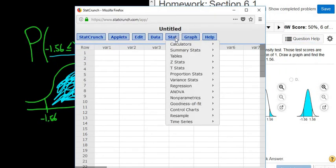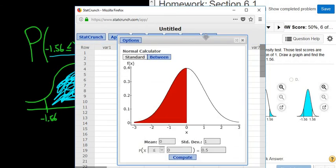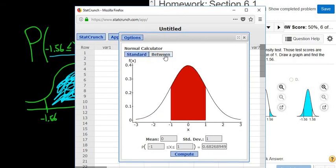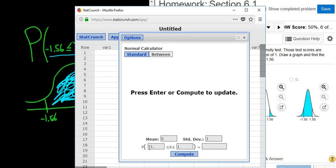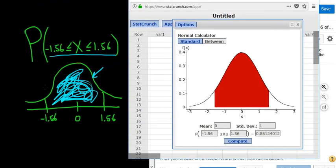All right, let me just go to Stat, Calculators, Normal. Left-click. And then it's the between probability we want, so between. Then you just enter the numbers. Here's the negative 1.56, and then here's the 1.56.